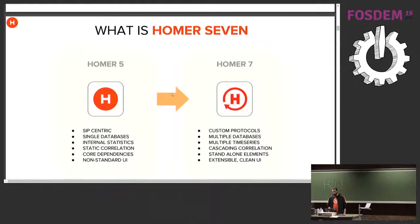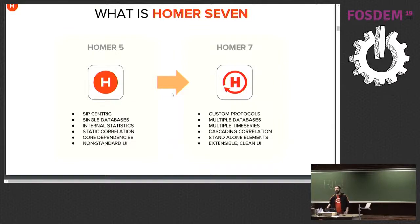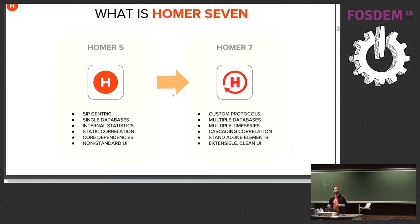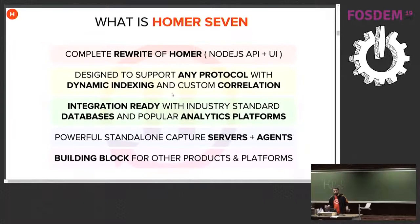Homer 7 is really an evolution of the project which tries to get rid of some of our design limitations and open the doors to whatever is coming next. We don't want to make the same mistakes again. So we dropped being SIP-centric, we dropped being tied to specific databases, we dropped our internal way of doing statistics, and we dropped the way we were doing correlation. We basically threw it all away. We kept the concept of Homer and tried to rethink how it works internally.